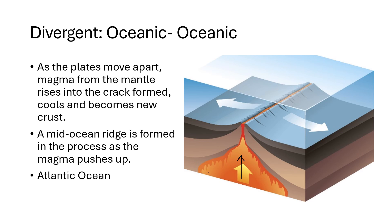The convection current brings warm magma rising in the middle, which then cools and pulls the crust outward in one direction, while the other side does the same in the opposite direction. That's what we get in the Atlantic Ocean — that's one example of a divergent oceanic-oceanic boundary.